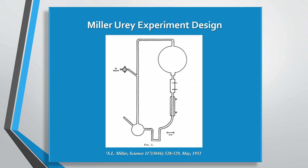But Miller and Urey did it anyway using simulated hypothetical conditions. If you look at this slide, you'll see the experimental apparatus from their original publication. In this experiment, they mixed methane (CH4), ammonia (NH3), hydrogen (H2), and water (H2O) in a circular system of sealed glass tubes and flasks. One of which contained electrodes, which is what they're showing right there.